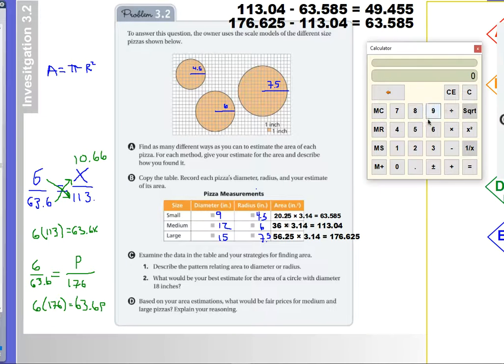So cross multiplication would say 6 times 176 is going to equal 63.6 times P. Okay, let's do it. So 6 times 176 is equal to, divide it by 63.6, and we get a grand price of $16.60.